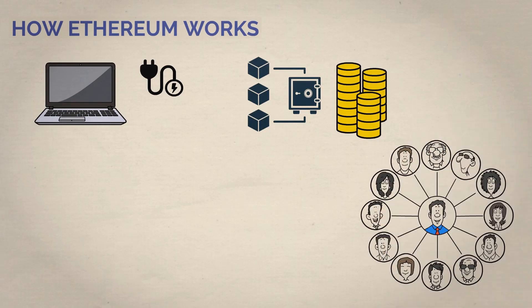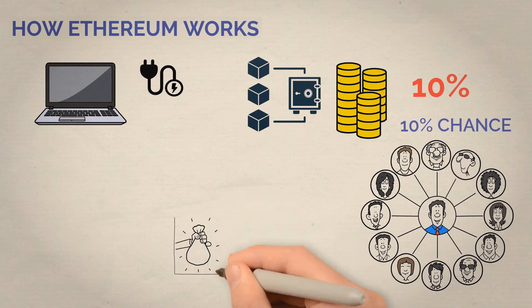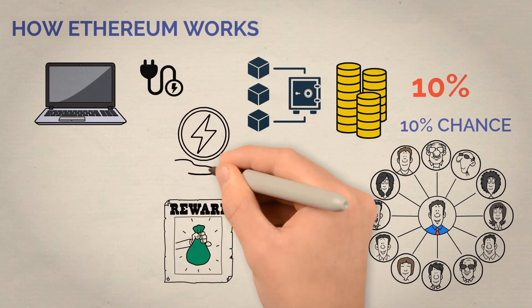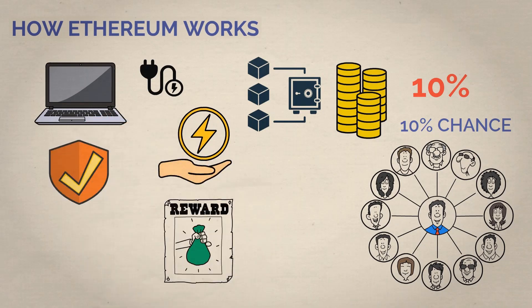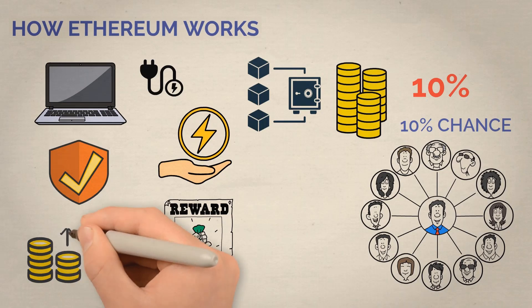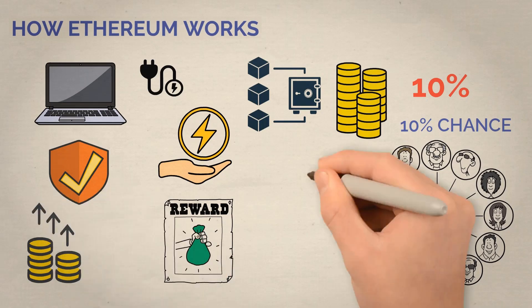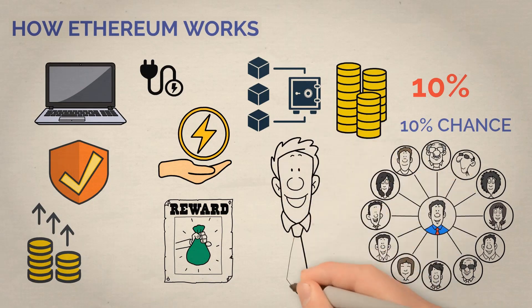So, let's say there are 100 people in the network, and each of them has a certain amount of coins. If you have 10% of all the coins in the network, you have a 10% chance of being the next one to add a block and get rewarded. It's a bit different, but it's more energy efficient and also considered more secure than POW. Plus, it gives an incentive for holders to hold the coin and support the network, as they can earn more coins by staking them. So, it's a win-win for both the holders and the network.